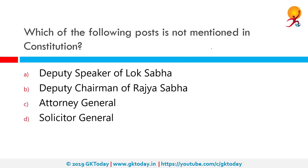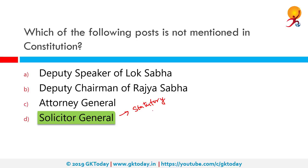Which of the following posts is not mentioned in the Constitution? The correct answer is the Solicitor General of India. The Solicitor General is subordinate to the Attorney General of India and assists as the second law officer of the country. He is assisted by Additional Solicitors General — there are four of them. Currently the Solicitor General is Tushar Mehta. Unlike the post of Attorney General for India, which is a constitutional post under Article 76, the post of Solicitor General of India is statutory — not mentioned in the Constitution but created according to convenience.